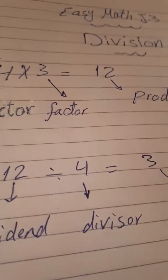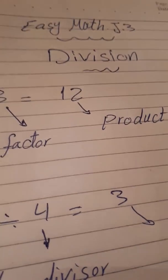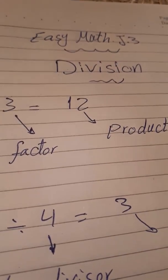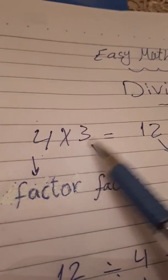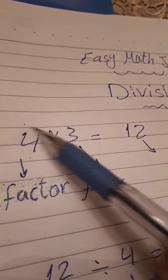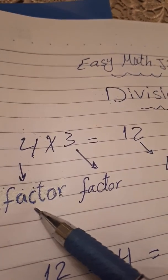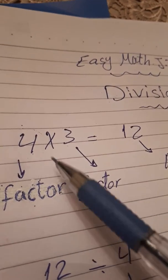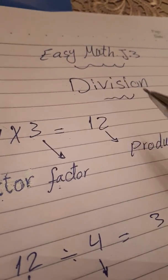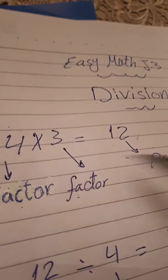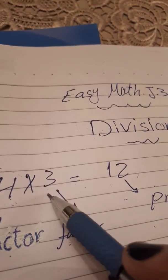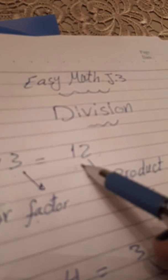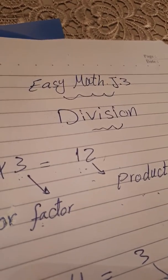Unit 2 in Junior 3 is division. What is the meaning of division? Division is the opposite of multiplication. In multiplication we say 4 times 3 equal 12. The two numbers are factors, and 12 here is called the product. In multiplication, we repeated 4 three times and the product was 12.